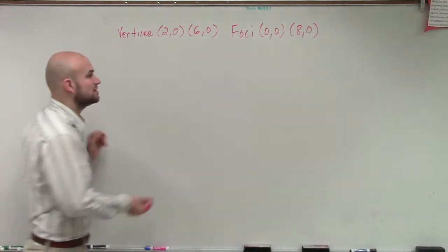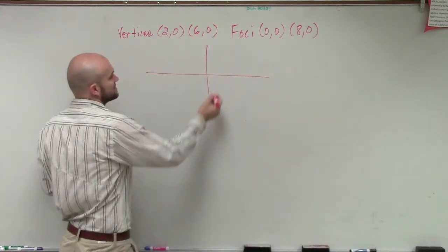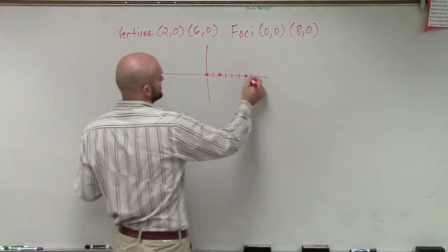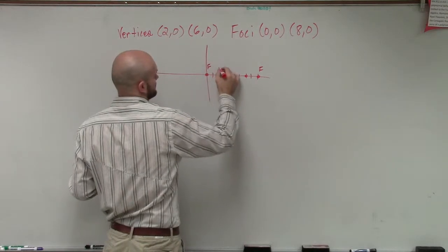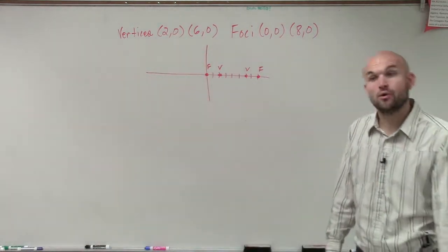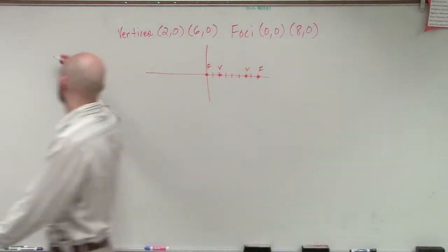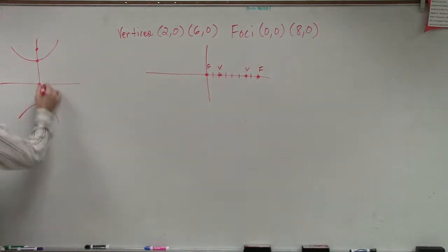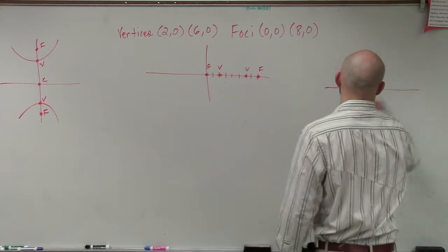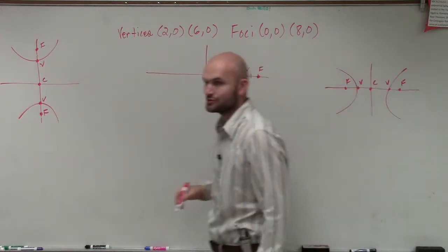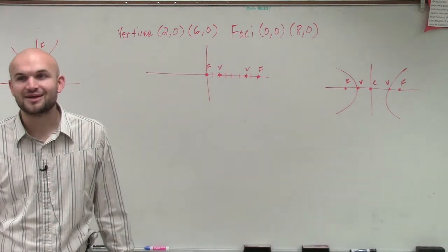So what we're going to do to determine this is let's graph our given points and see what we have. So we have vertices at 2 comma 0, 6 comma 0, we have foci at 0 and at 8 comma 0. So if I have my vertices and my foci all on this transverse axis right here, is that transverse axis going to be horizontal or vertical? Horizontal. Very good.